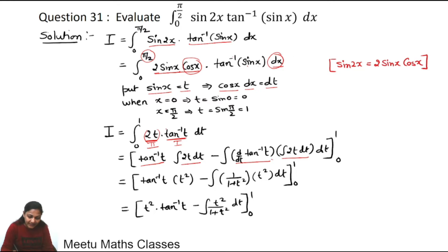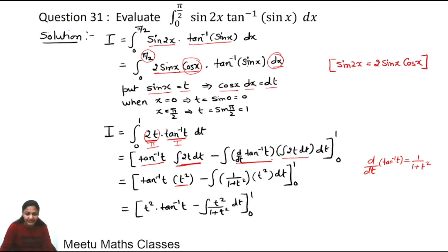tan⁻¹(t) stays as-is; the integral of 2t is t². The derivative of tan⁻¹(t) is 1/(1 + t²), and the integral of 2t is t². So this becomes t²·tan⁻¹(t), and the remaining integrand becomes t²/(1 + t²).